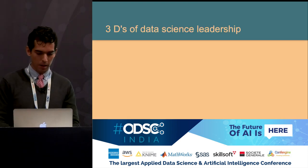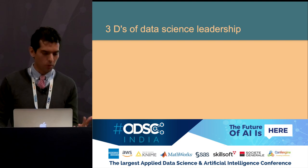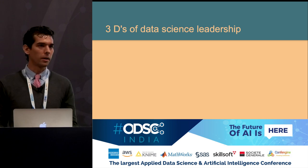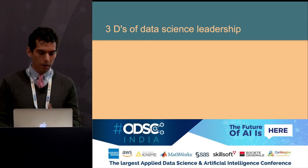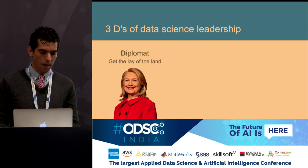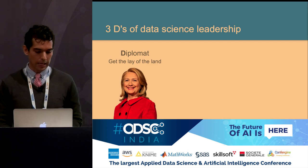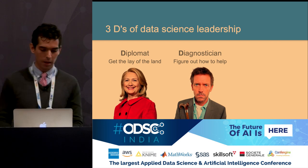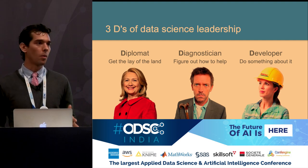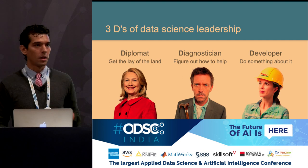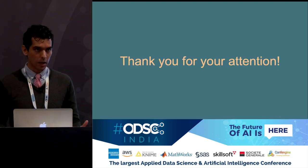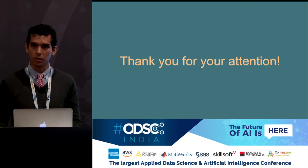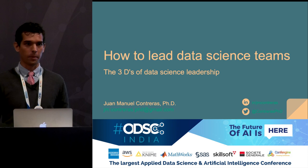To wrap up: a data science leader to be successful has to wear three hats. First, they have to be a diplomat — get the lay of the land in the organization. They have to be a diagnostician — figure out how they can best help the organization and help their team to improve. And finally, they have to be a developer — able to do something about what they've found, to grow themselves, their team, and the organization. I've learned a lot of this from trial and error and I'm curious to hear your thoughts. Thank you for your attention.